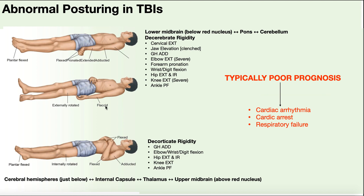A useful memory trick: look at how many E's are in each word. Decerebrate has four E's — E for extension — so there's more extension in decerebrate rigidity. Decorticate has only two E's, so it's associated with flexion and less extension of those particular joints.